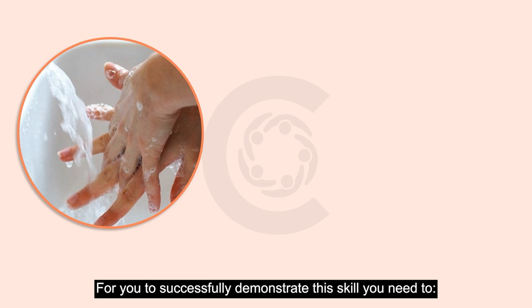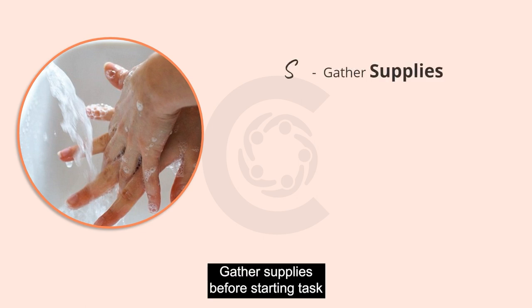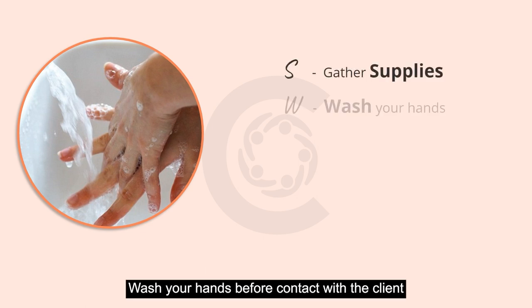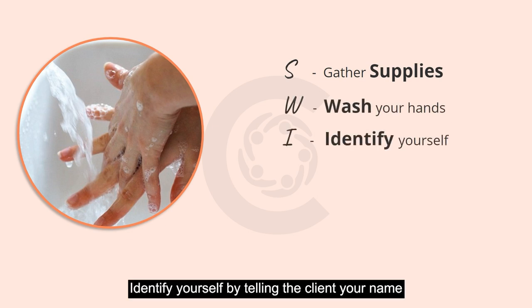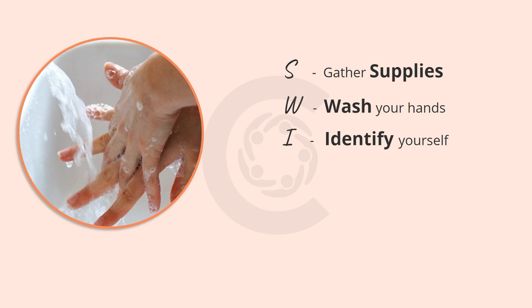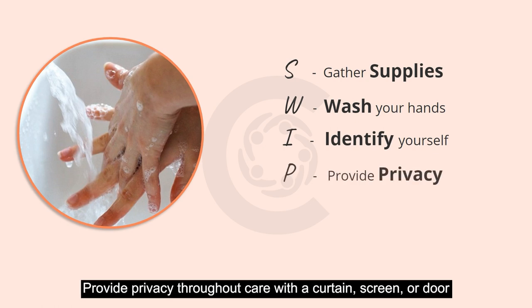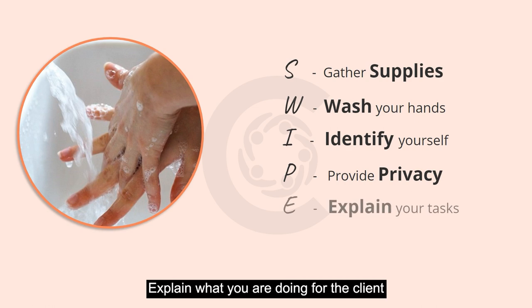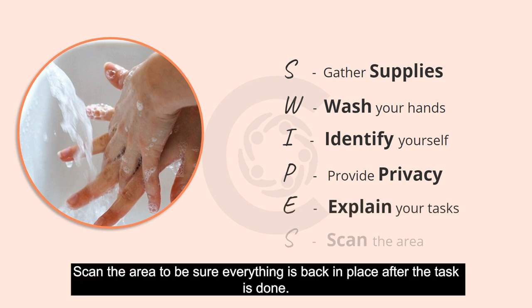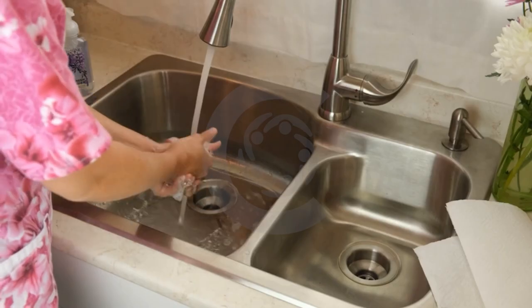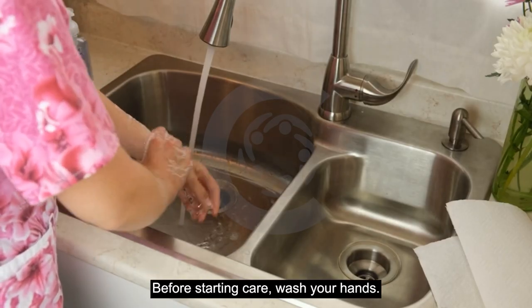To successfully demonstrate the skill you need to: gather supplies before starting the task; wash your hands before contact with the client; identify yourself by telling the client your name; provide privacy throughout care with a curtain, screen, or door; explain what you are doing for the client; and scan the area to be sure everything is back in place after the task is done. Before starting care, wash your hands.